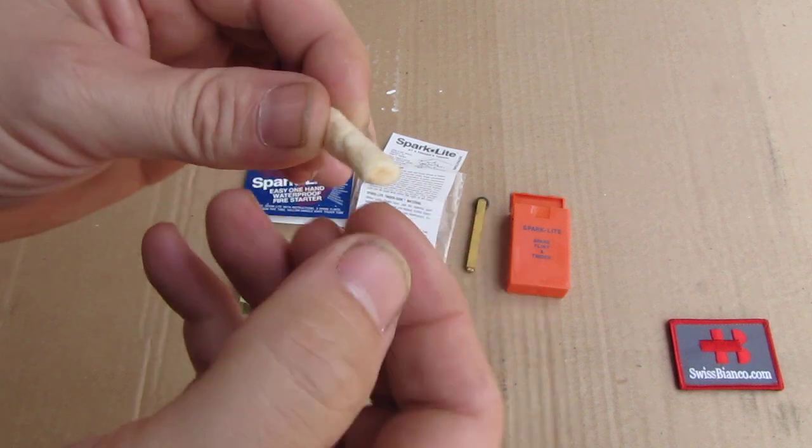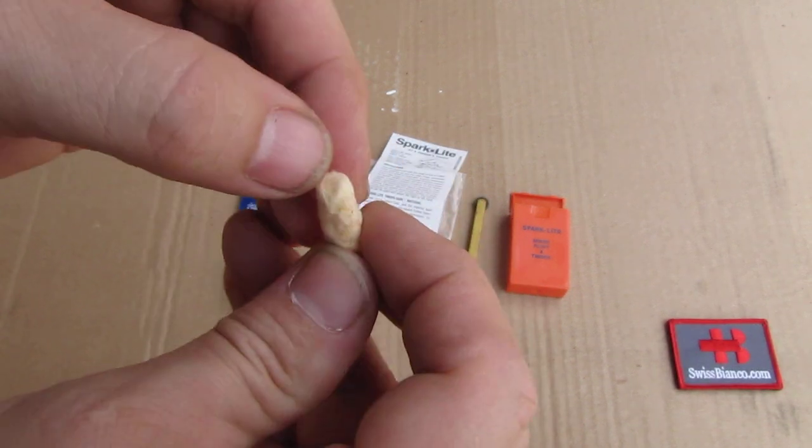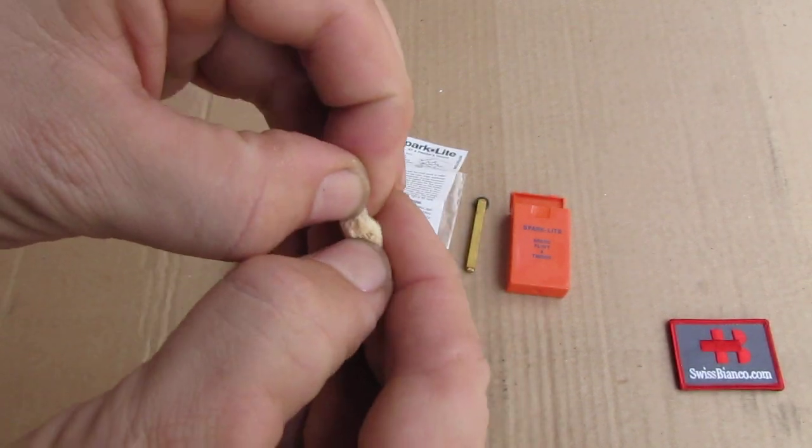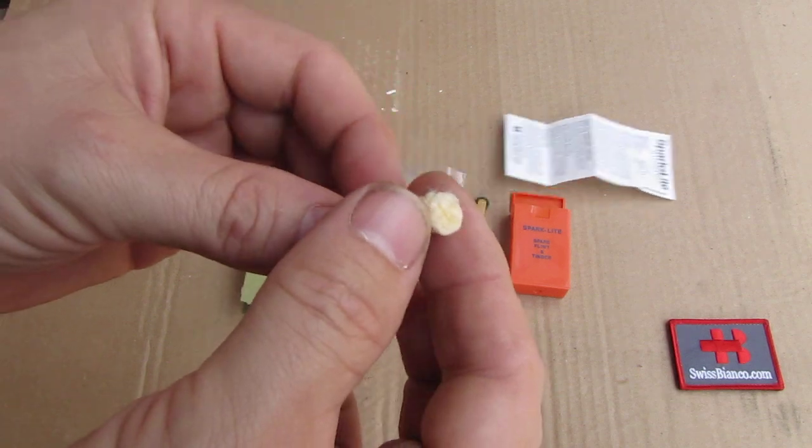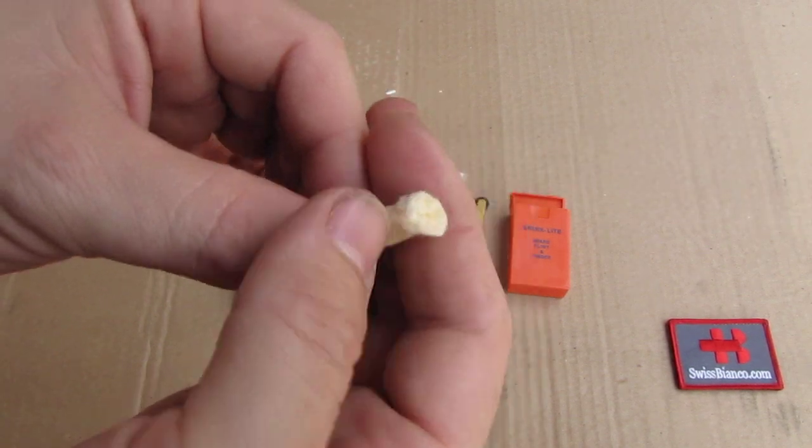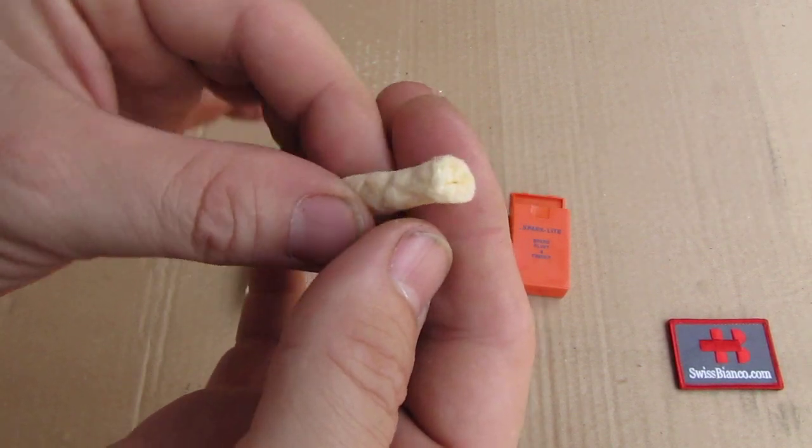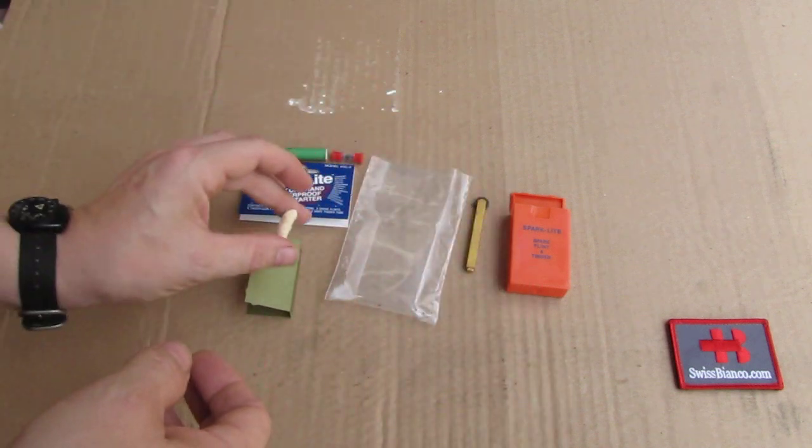It's a bit pliable. For starting the fire you can always take that a bit apart, make it more fluffy, and then start it.